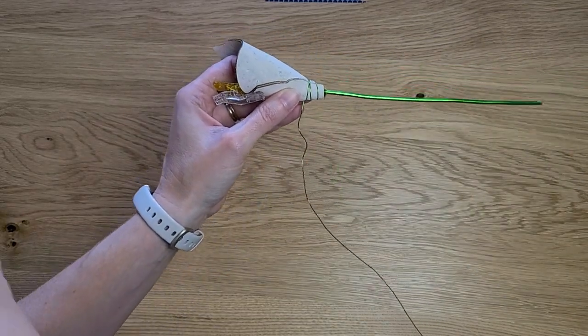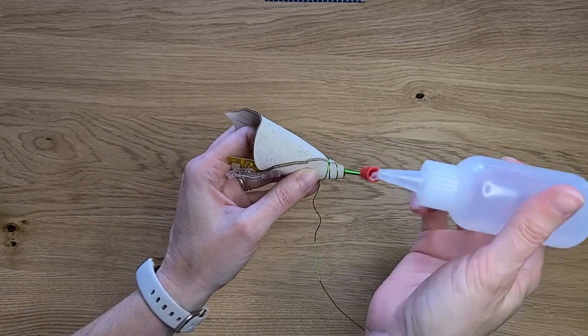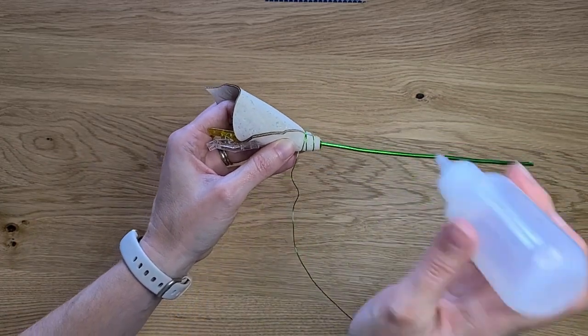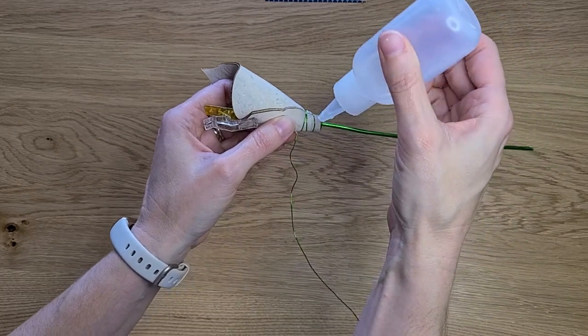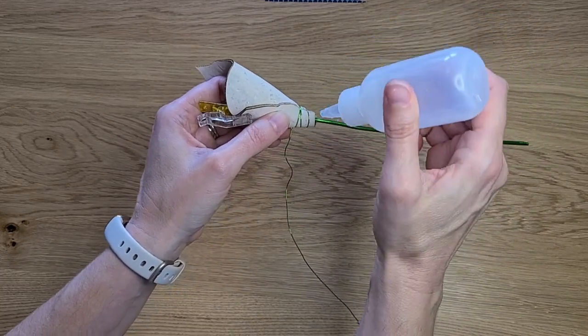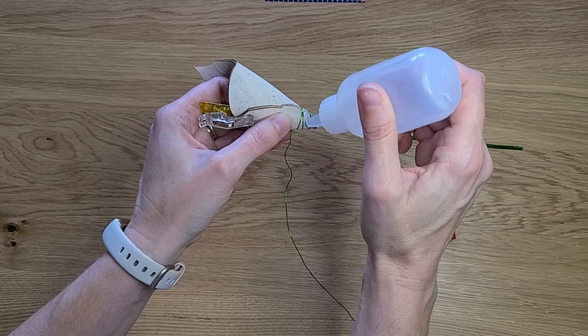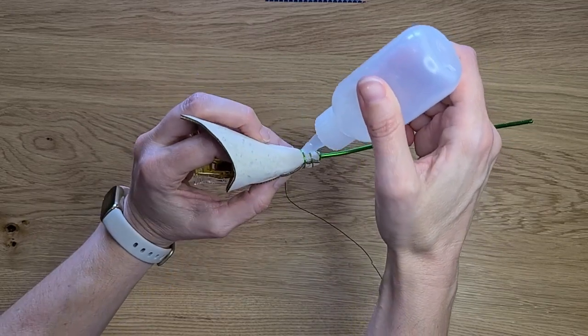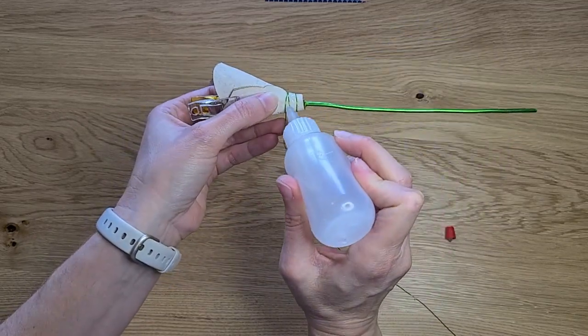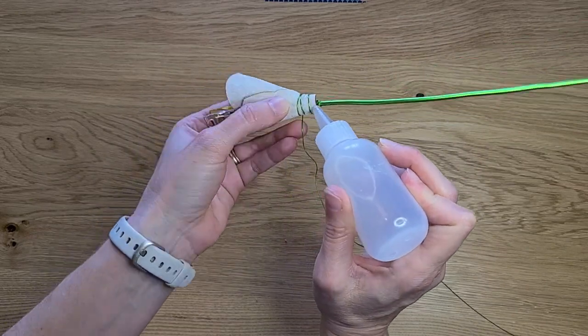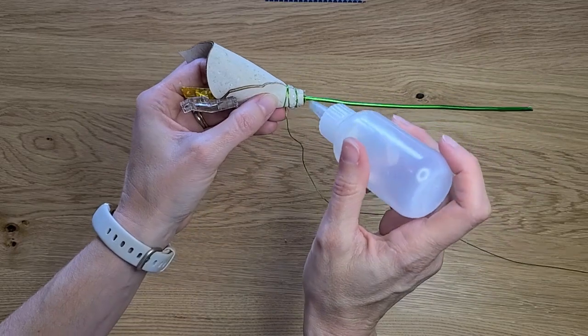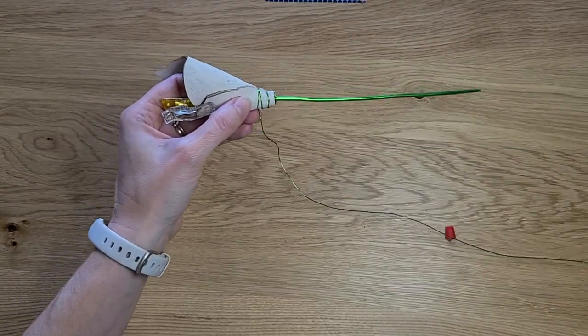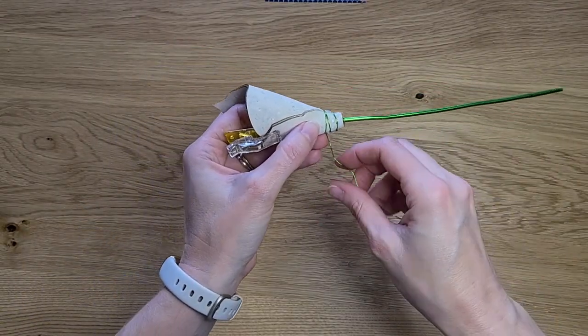I like to add just a little bit of glue to kind of help my wire stay in place. You don't want too much. This glue is coming out fast today. That will help the wire kind of stay where you want it so the flower doesn't slip later on.